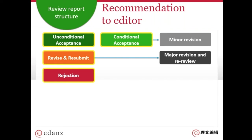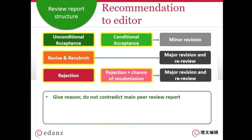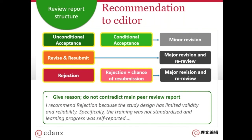You can reject the paper but with good reason. Some journals allow another choice: reject but suggest major revisions, such as another experiment, test, or analysis — again requiring another round of peer review. It is the chief editor who makes the final decision, so these are just your recommendations. Give a reason — don't just say the paper is bad — and don't contradict what you put in the part for the authors. Here's an example: 'I recommend rejection because the study design has limited validity and reliability; specifically, the training was not standardized and learning progress was self-reported.'